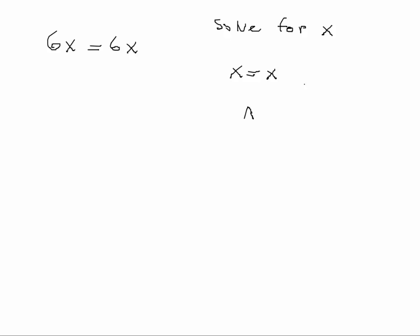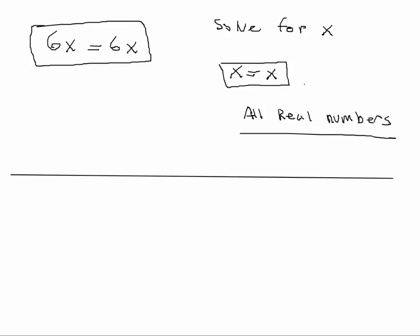So all real solutions, all real numbers would be the solutions to this equation. Does that make sense? So as this one. 6x equal to 6x would be another example of all real numbers would be the solution. However, if I have 6x is equal to 6x plus 2, then that would be no solution. Do we see the difference here?